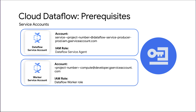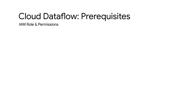The worker service account is used by worker instances to access input and output resources after you submit your job. By default, workers use your project's Compute Engine default service account as the worker service account.